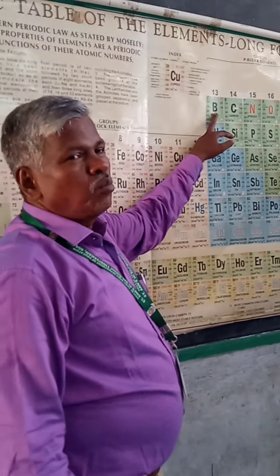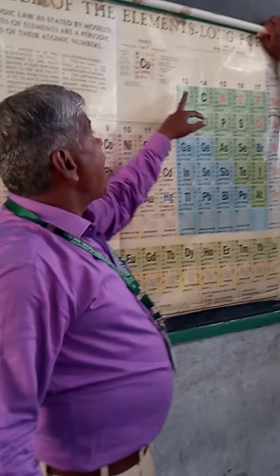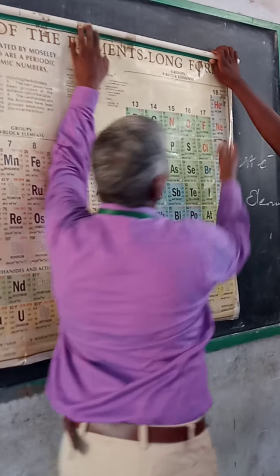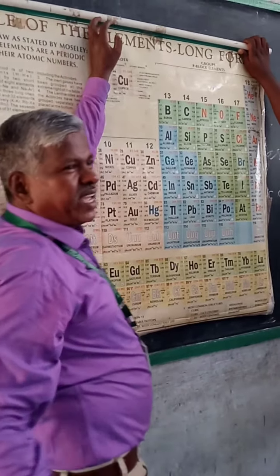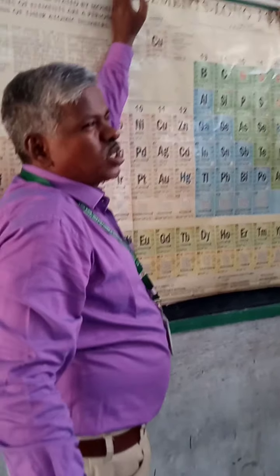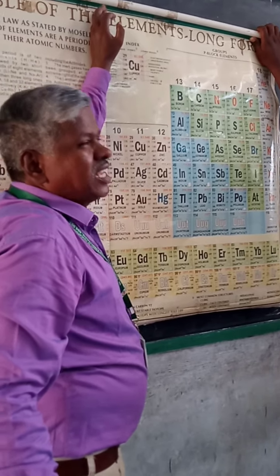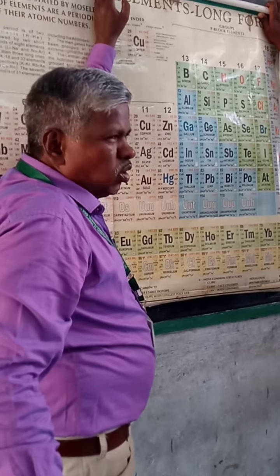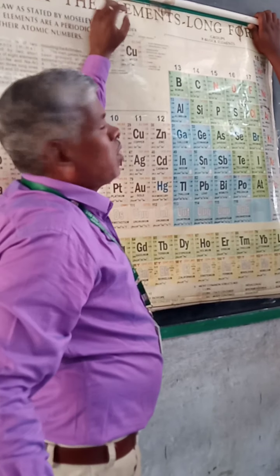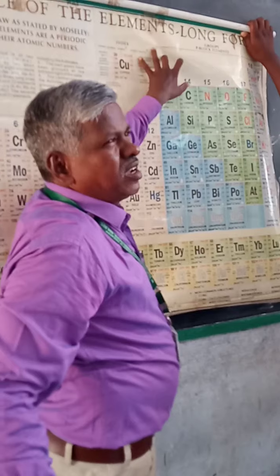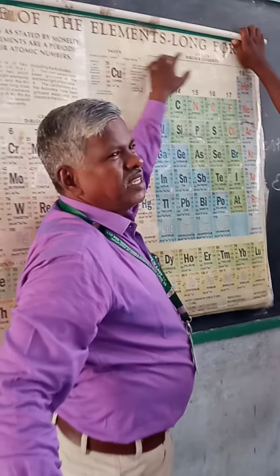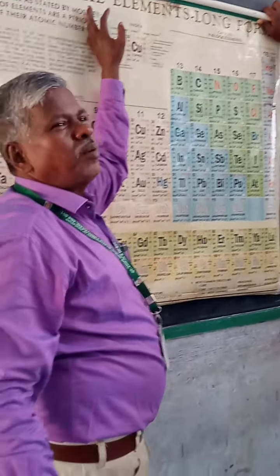There are 18 groups in the periodic table. P block elements belong to groups 13, 14, 15, 16, 17, and 18. These groups are called P block elements.